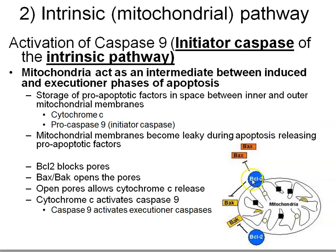When Bax levels exceed BCL2 levels, Bax will oligomerize — that is, many proteins stick together and form channels in the outer membrane of the mitochondria. These channels allow the contents of the inter-membrane space to be released, including cytochrome C and pro-caspase 9.